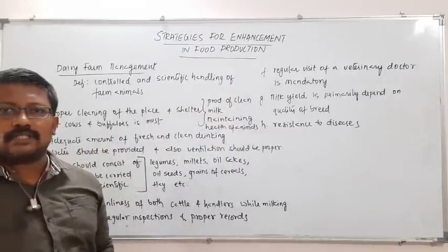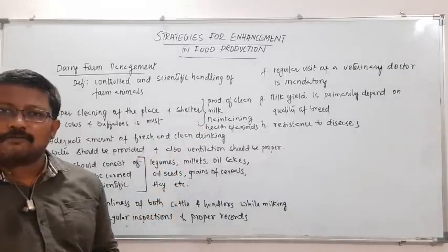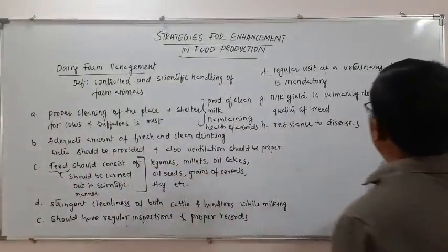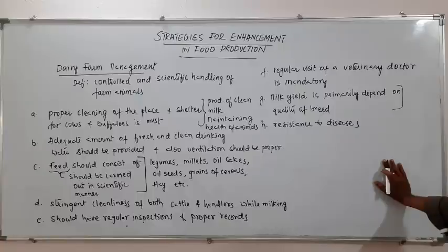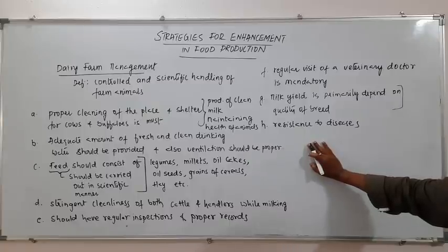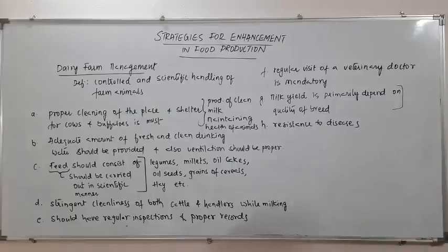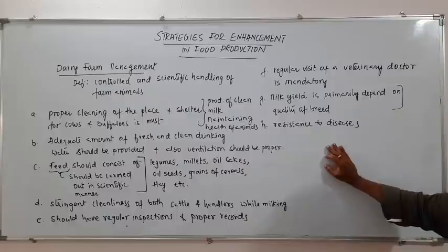Milk production primarily depends on the quality of breed. We need to select a breed that is capable of giving very good yield of milk, and we should also look at other features such as whether they are capable of resisting diseases. Breeds that are very good at resisting diseases are important, and we like to choose such breeds for our dairy farm.